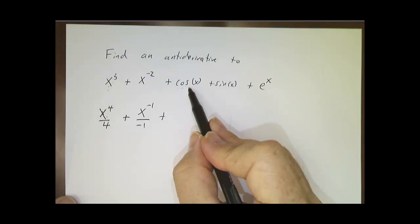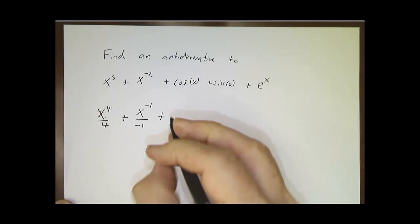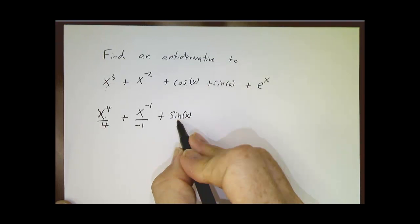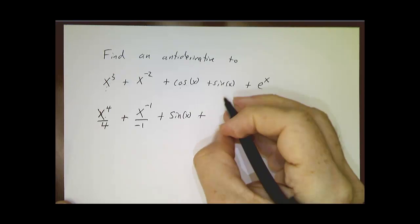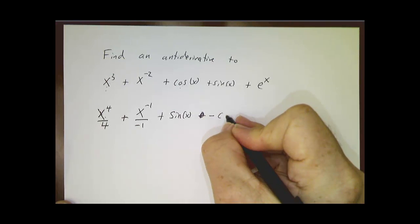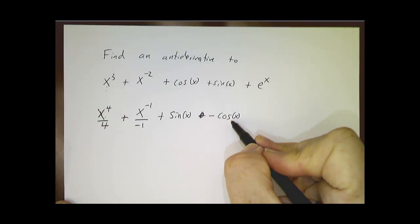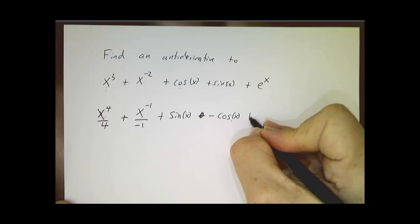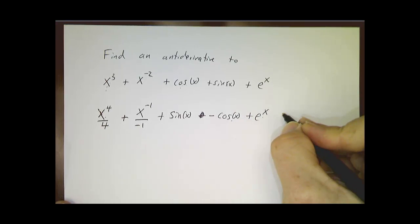Watch out. The derivative of cosine is negative sine, but the antiderivative is sine. The derivative of sine is cosine. The derivative of sine is cosine, but the antiderivative of sine is minus cosine. This is a function whose derivative is sine.